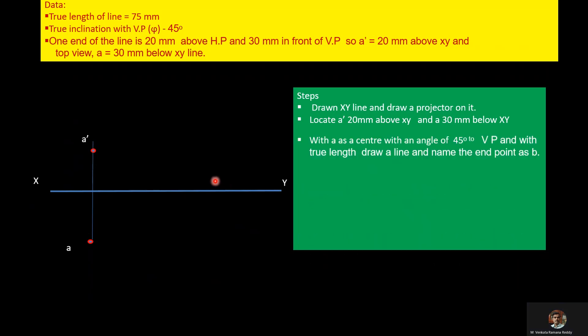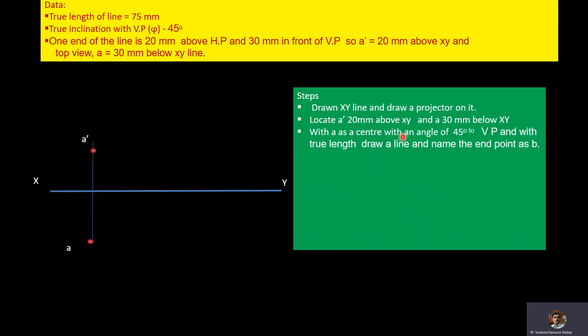Then, with A as center, with an angle of 45 degrees to VP and with the true length, draw a line and name the end point as B.